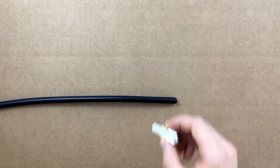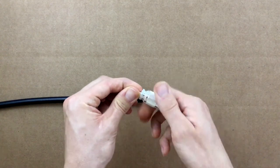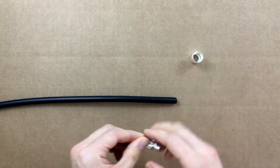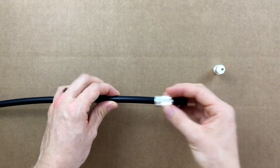We start out by separating the outer shell from the PL259 by simply unscrewing it. Place the outer shell on the coax.